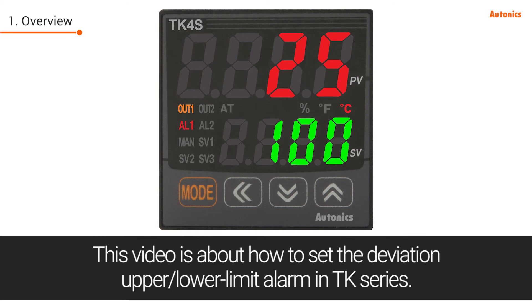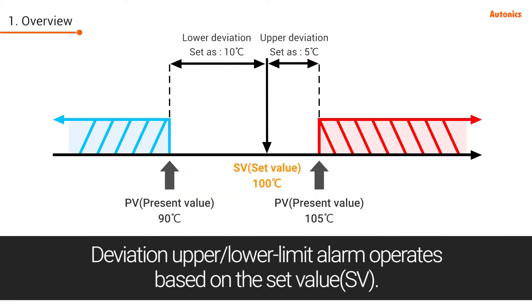This video is about how to set the deviation upper/lower limit alarm in the TK series. The deviation upper/lower limit alarm operates based on the set value.